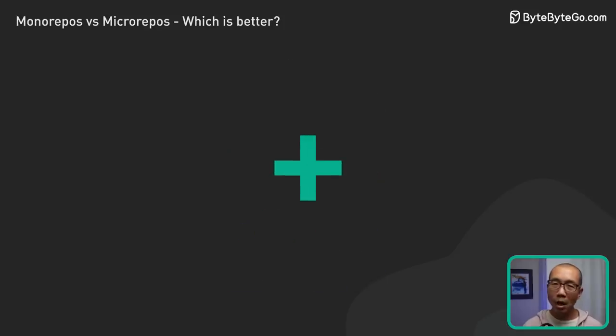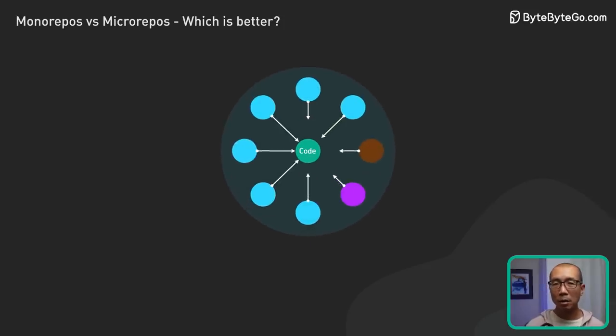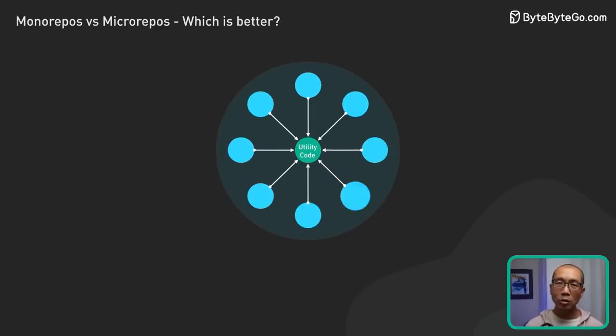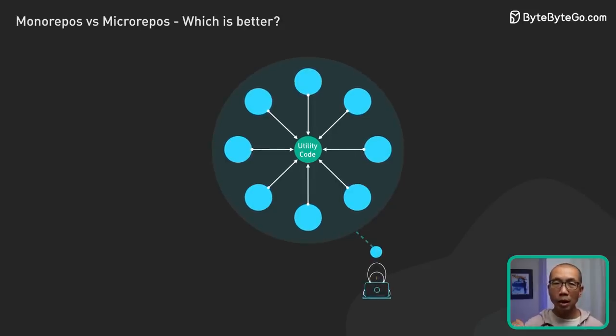Let's go through the pros and cons of monorepos. Here's one clear benefit: making cross-project changes becomes a breeze. Let's say we have a utility function that's used in 10 different services, and we need to make a change. In a monorepo, we can do this in one commit, in one place.